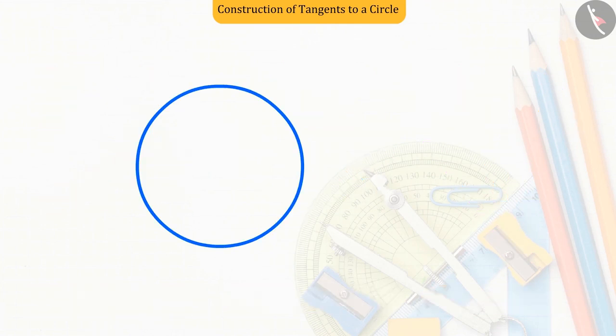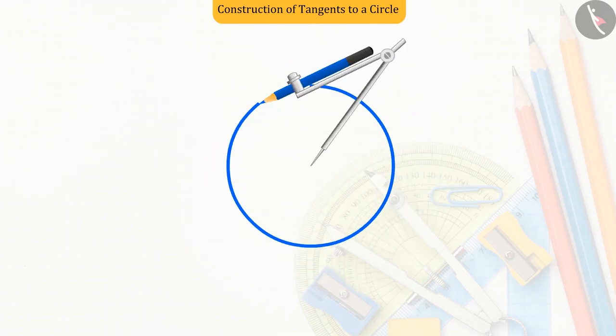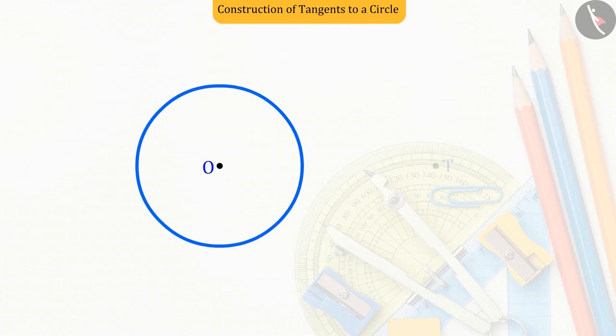Let us now see how tangents can be drawn on a circle from a point outside the circle. A circle whose center is O. Let the point outside be T. Tangents are to be drawn on the circle.